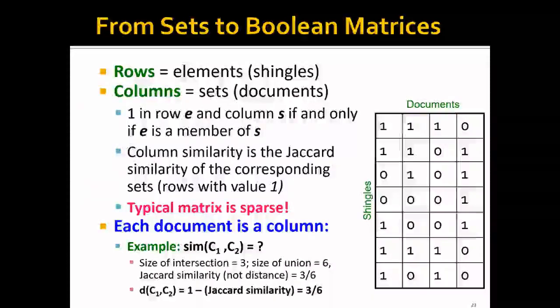For example, let's see what's the similarity between column 1 and column 2, or document 1 and document 2. And the intersection size will be 3, because if we look at the first row, the second row, and the sixth row, only they are of the bit 1, and the size of union will be 6. Therefore, the Jaccard similarity will be 3 over 6, and the Jaccard distance will be 1 minus that, which is also 3 over 6.